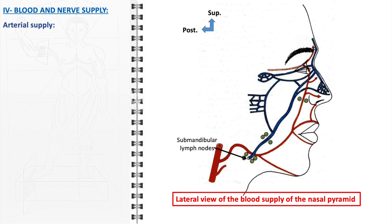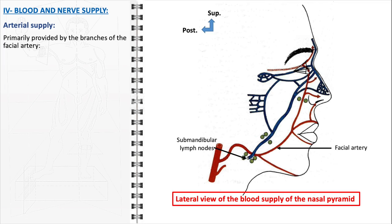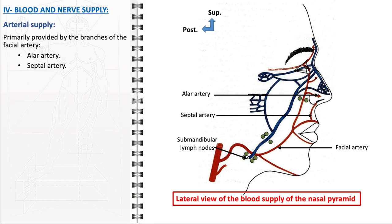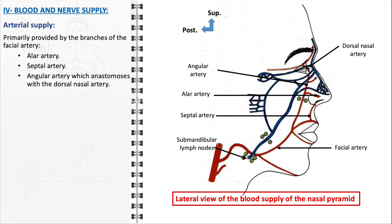The arterial supply and venous drainage of the nose are essential components of its vascular system. The primary blood supply is provided by branches of the facial artery, including the alar artery, which supplies blood to the alar part of the nose including the nasal alae; the septal artery, responsible for supplying blood to the nasal septum; and the angular artery, which anastomoses with the dorsal nasal artery, providing blood to the upper part of the nose including the bridge and dorsum, ensuring a rich blood supply to these areas.